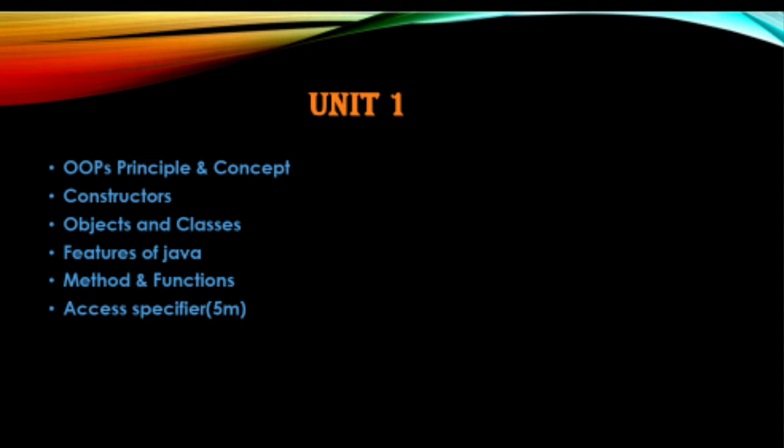Next is the constructor topic — constructor topic is 6 or 7 marks, that is the example. Next is method and function — method and function, that is the two differences. That is object and class, the difference is 6 or 7 marks. Next is the access specifier — there are three types, that is the difference between 2 marks. If we use 13 marks or 7 marks, we can use 2 marks.